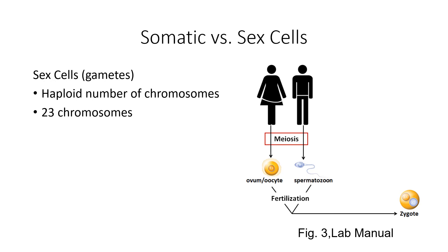Let's contrast the somatic cells with the sex cells. Your sex cells are your gametes. If you are female, you have ovaries that produce ovum or oocytes — those are sex cells. And if you are male, you have testes that produce sperm. These sex cells have a haploid number of chromosomes — only 23. And when they unite during fertilization, they form a zygote which then has 46 chromosomes. The gametes are formed by a process called meiosis, and you'll likely cover that in ANP2.